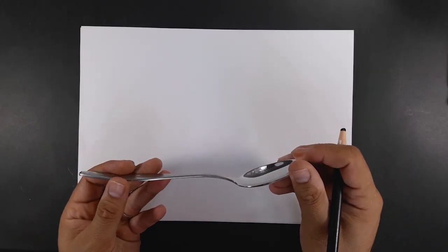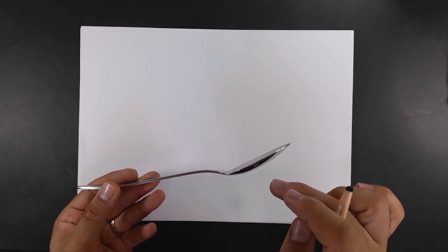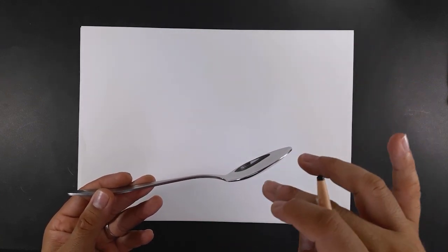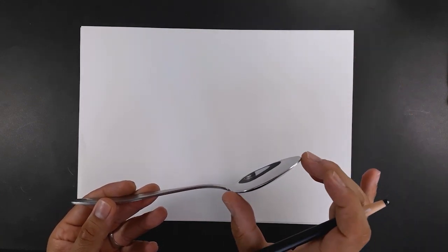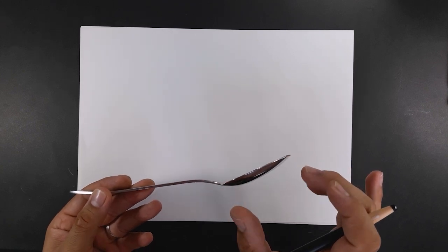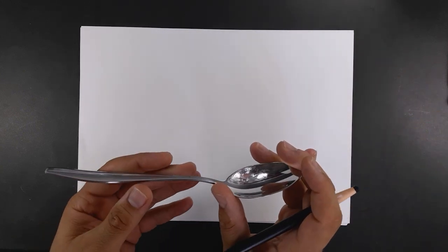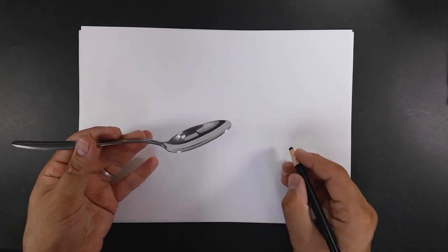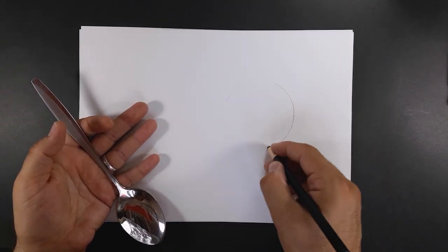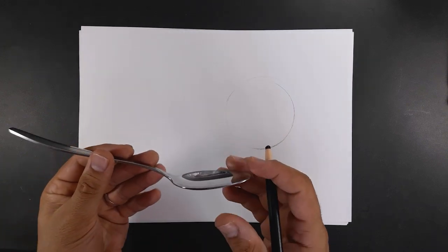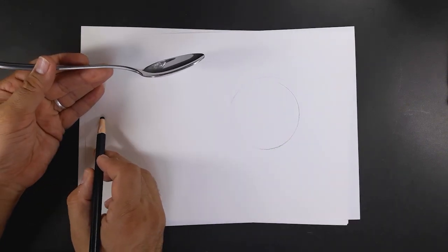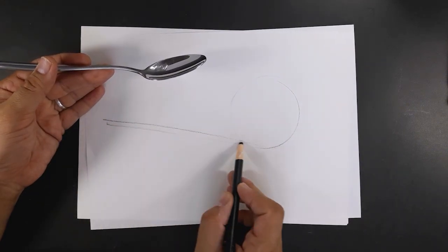See the form of this spoon. The hollow part of the spoon is like a sphere, and from this angle, the spherical part is seen as a circle. So I will start by drawing a circle. The spoon handle is a very narrow rectangular cube. I draw a narrow rectangle for the handle.